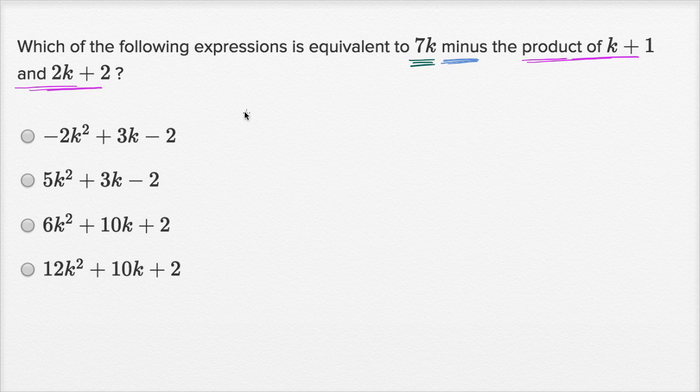All right, so this is going to be 7k minus the product of k plus one and 2k plus two. To expand it all out, we will want to multiply these two expressions, so let's do that first.